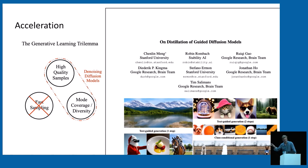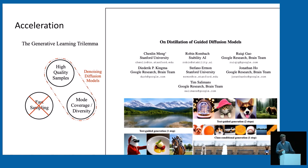I want to highlight one piece of work I participated on — though there are many more on this topic — which is distillation of diffusion models. The goal is to accelerate the sampling process and bring it from 20 to 50 function evaluations down to something like four.